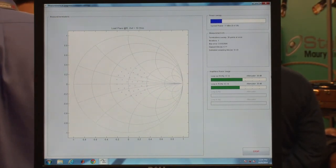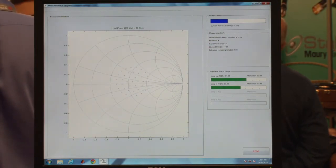Now remember in a traditional load pull system, even a modern active load pull system using other techniques and other tools, you would only see a single point at a time converging. Here you see about 50 points at a time.